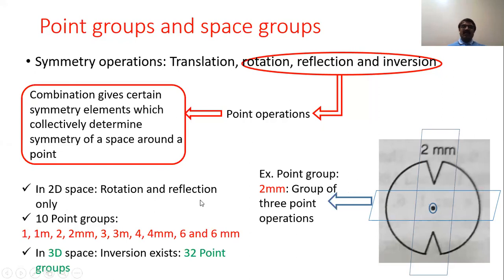In this way, the combination of rotation and reflection gives rise to 10 different point groups in two-dimensional lattices. Those are: 1, 1mm, 2, 2mm, 3, 3mm, 4, 4mm, 6, and 6mm. So these are all 10 point groups possible in 2D space.